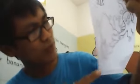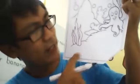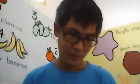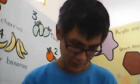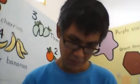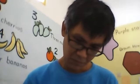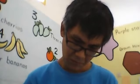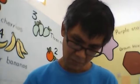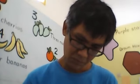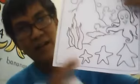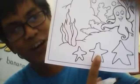The next instruction is to draw three starfish with three comparisons: big, bigger, and biggest. We will draw the starfish at the bottom. Look — big, bigger, and the biggest.